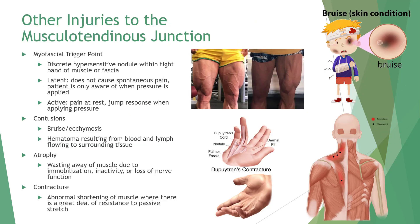Other types of injuries to the musculotendinous junction include myofascial trigger points — discrete, hypersensitive nodules within tight bands of muscle or fascia, classified as latent or active. These develop as the result of mechanical stress, either acute trauma or microtrauma, and may lead to stress on the muscle fiber, resulting in the formation of additional trigger points.